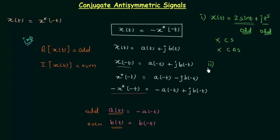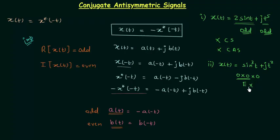In the second problem, x(t) = sin³(t) + jt². For sin³(t): odd × odd = even, then even × odd = odd overall, so sin³(t) is an odd signal. And t² is even. So the real part is odd and the imaginary part is even, which is exactly the condition for conjugate antisymmetric signals.